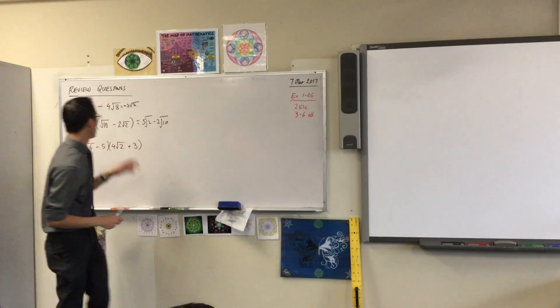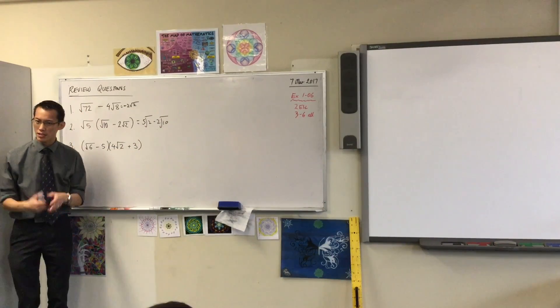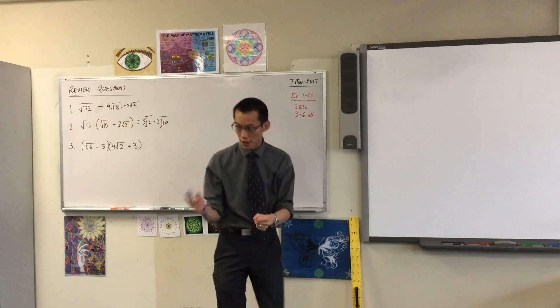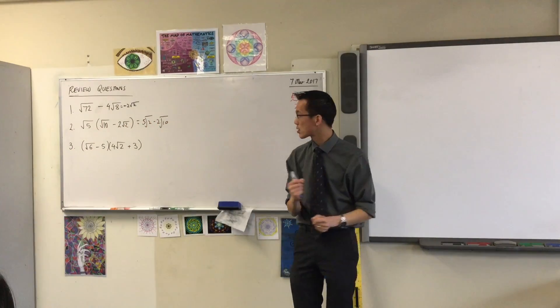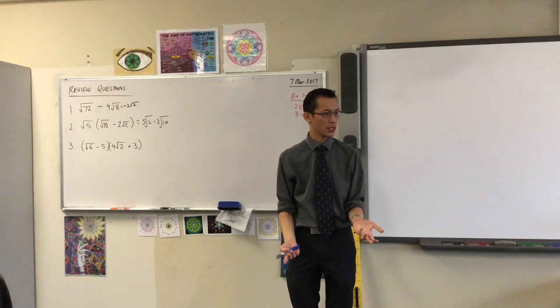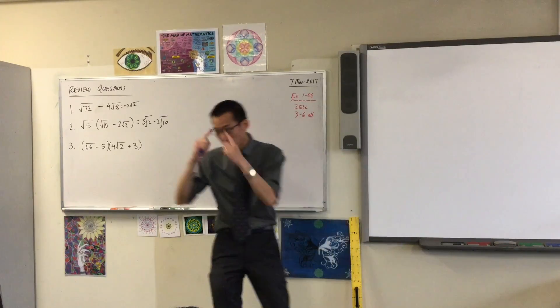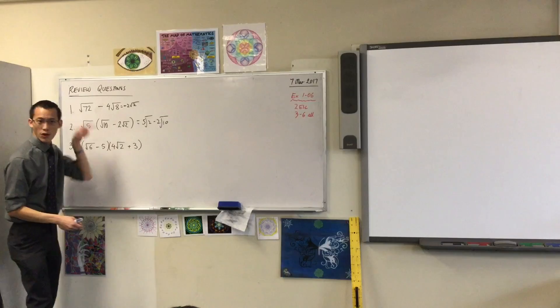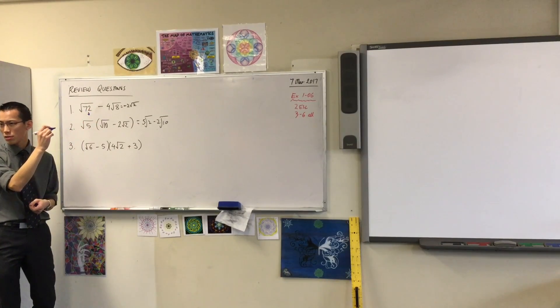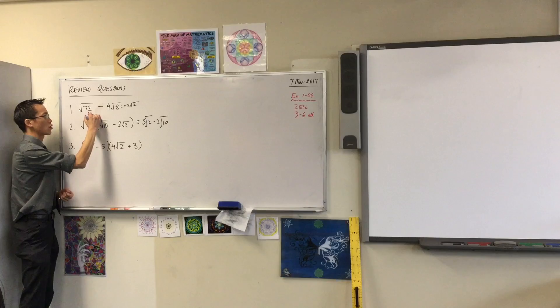Number one, root 72. From here you can see there's a big square number I can take out of it. What can you see? 36. The square root of 36 can be pulled out. The square root of 9 can also be pulled out, but 36 is bigger, so you might as well do that if you can see it. If I take the square root of 36 out, what is the square root of 36? It's 6, so this is 6 root 2.